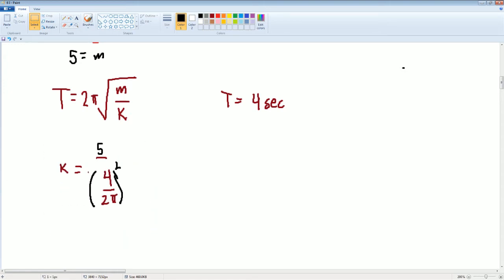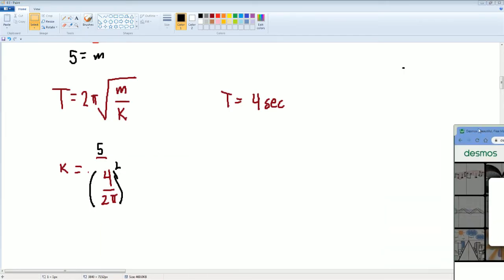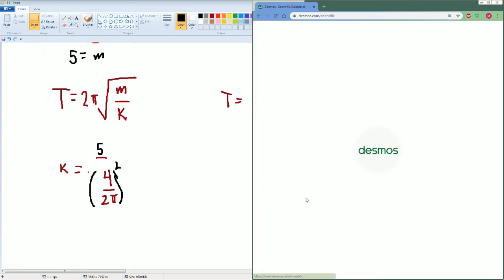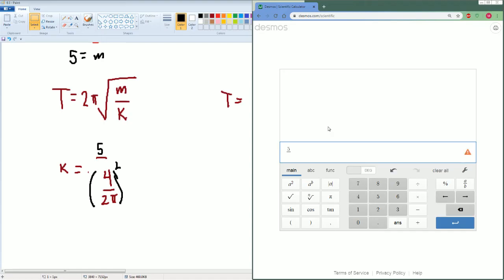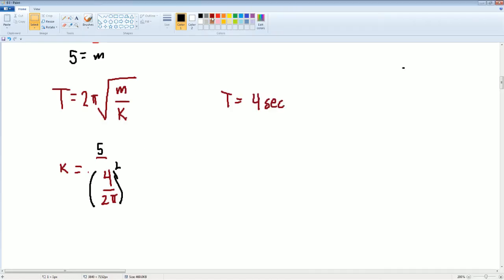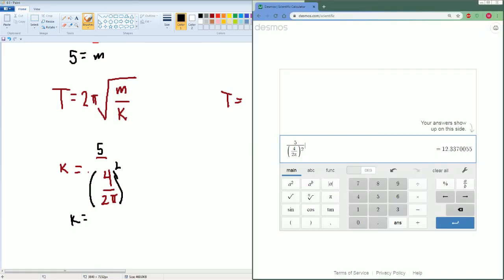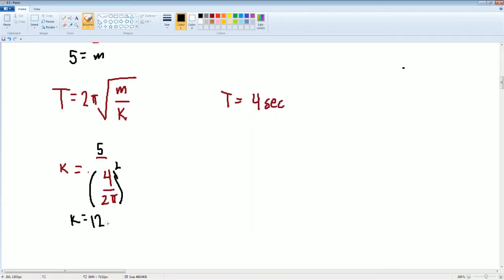And, we can plug down to the calculator. If you would like to see. So, let me grab Desmos. Scientific. We have 5 divided by the square root of 4 divided by 2 pi. And, I think we also had to square this. That's a reasonable k constant. So, here, the k is going to be, k is equal to 12.3. And, the spring constant is in newton meter.